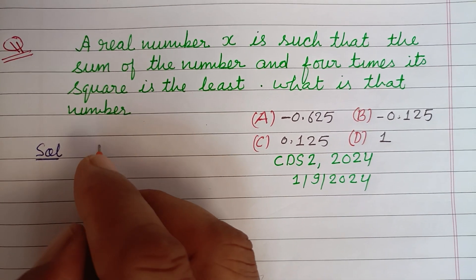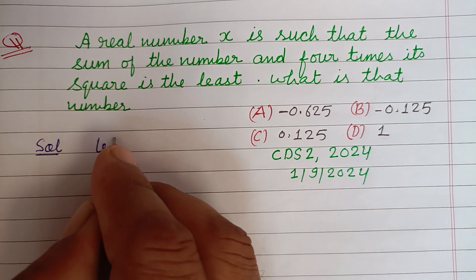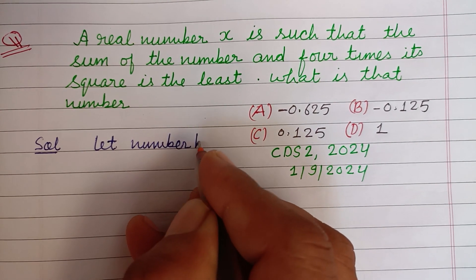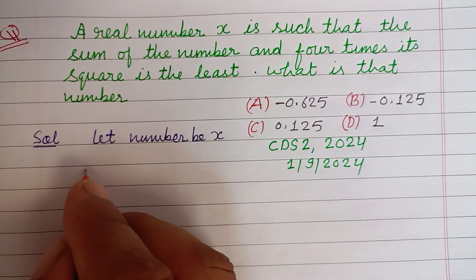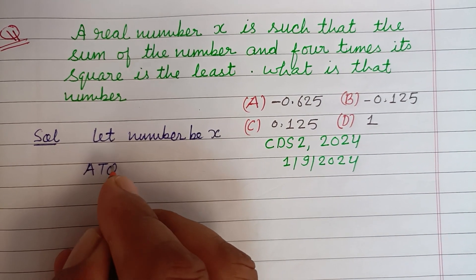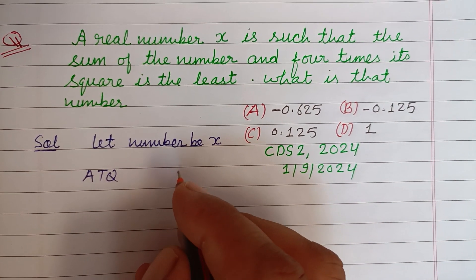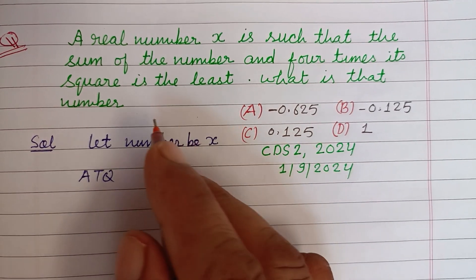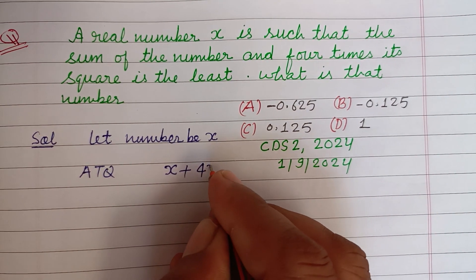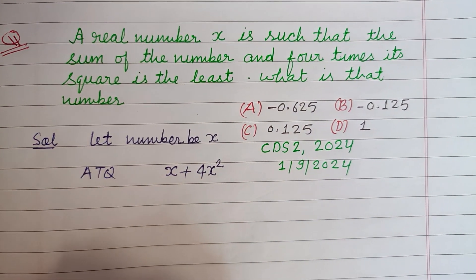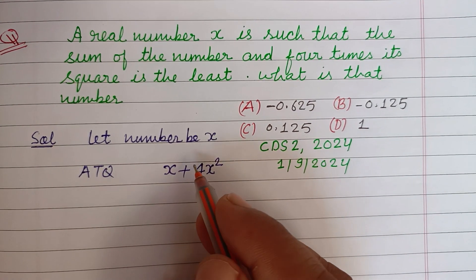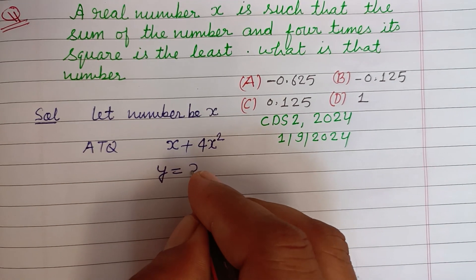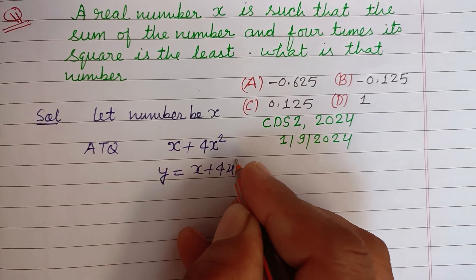So let the number be X. According to the question, sum of the number and four times its square is X plus 4X squared. This will be least, so let it equal Y. Y equals X plus 4X squared.